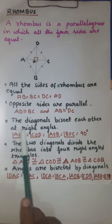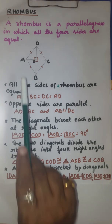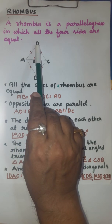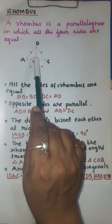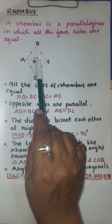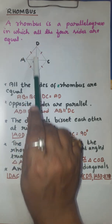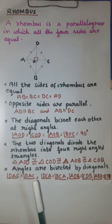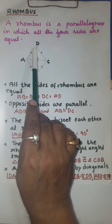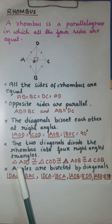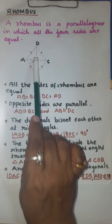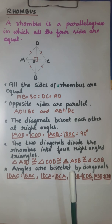The diagonals bisect each other at right angles. You can see that diagonal AC bisects diagonal BD at point O, in such a way that they form 90 degrees. That means the diagonals bisect each other at right angles — angle AOD, angle COD, angle AOB, and angle COB are all equal to 90 degrees.